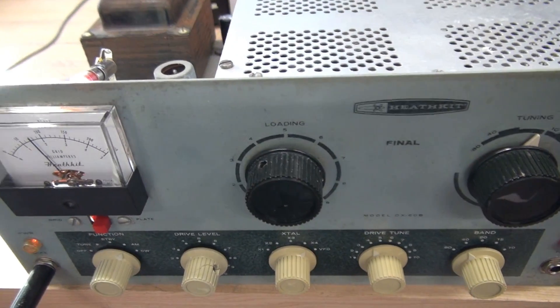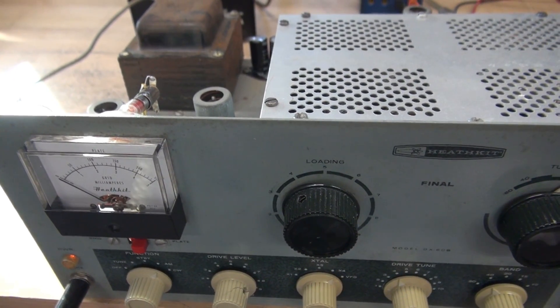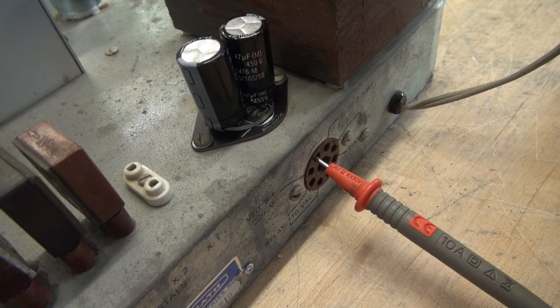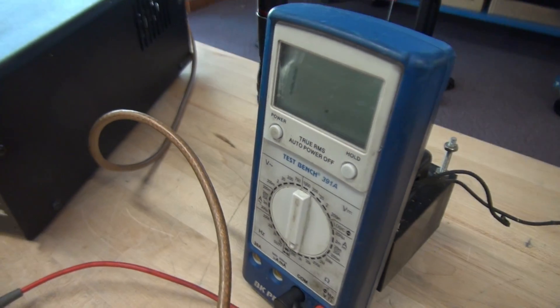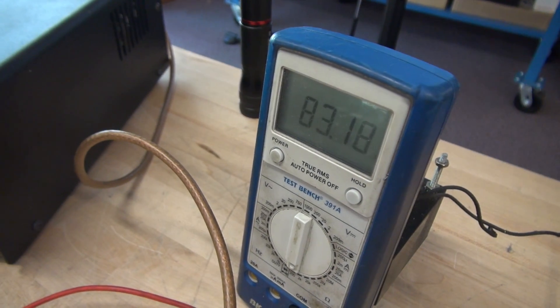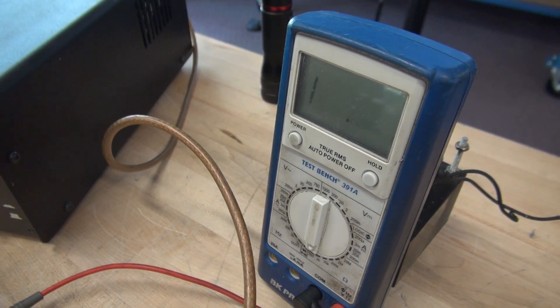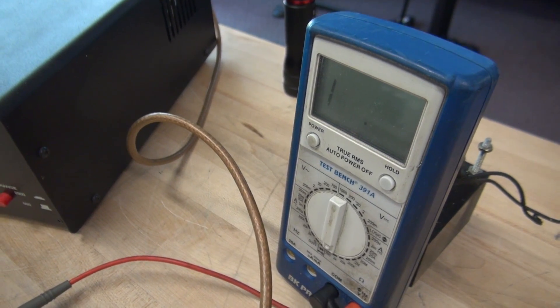The only thing I need to check now is that keying output for the amplifier on pin 3 of that octo socket. I've got my ohmmeter plugged into pin 3 of the octo plug. Key her up. And that's switching to ground. So you can use that to key up an amplifier or some other external apparatus.